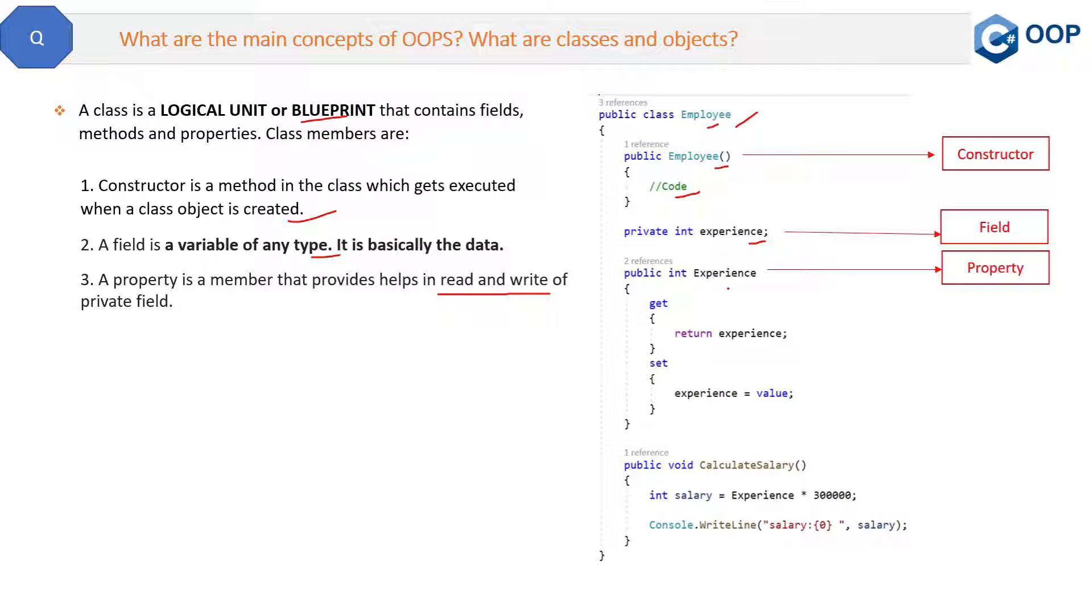Next important member of class is the method, which is right now calculateSalary here. What is a method? A method is a code block that contains a series of statements, or you can say that all the business logic of your application will be placed inside the methods only. Remember, properties and methods are the same. When I say same, properties are special kind of methods, but they just do one thing and that is getting and setting the fields only. That's why they are kept separate from the normal methods.